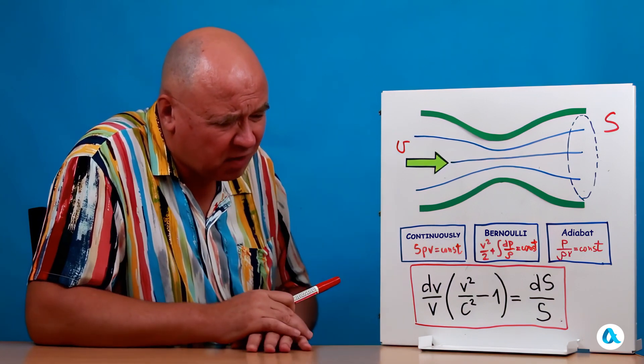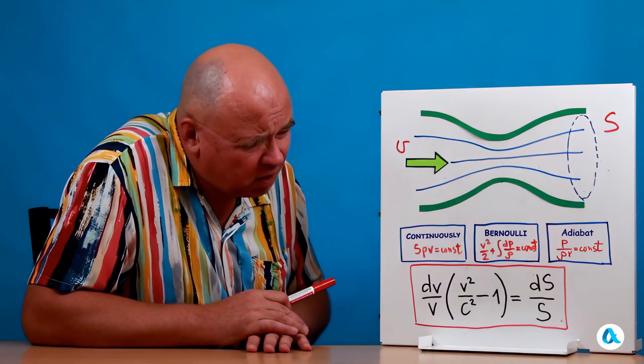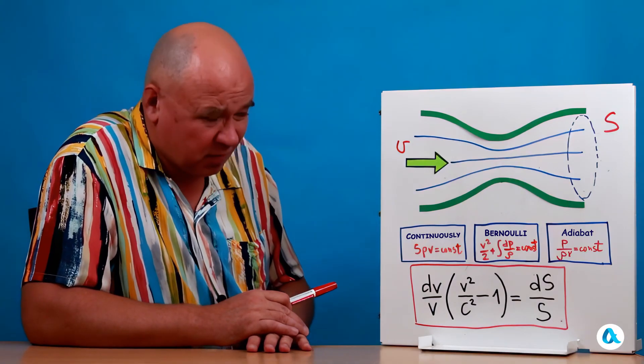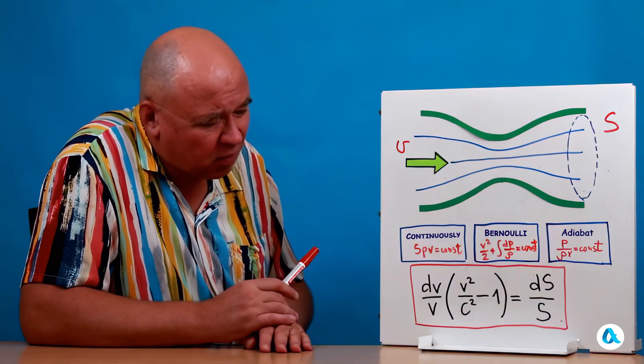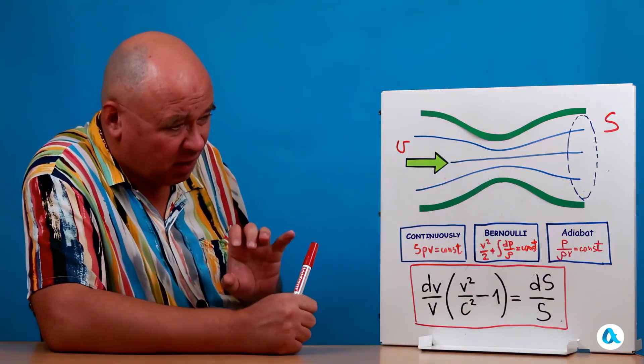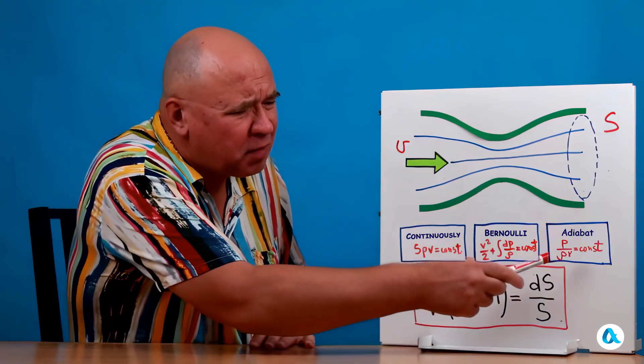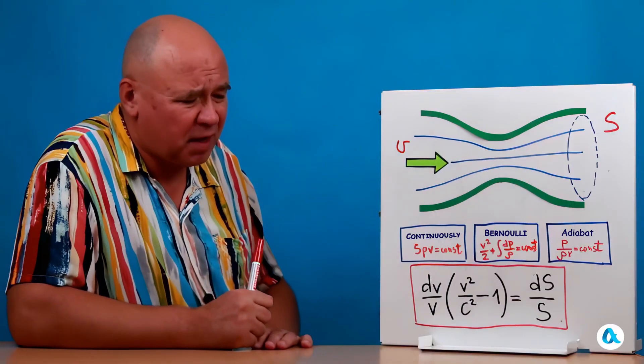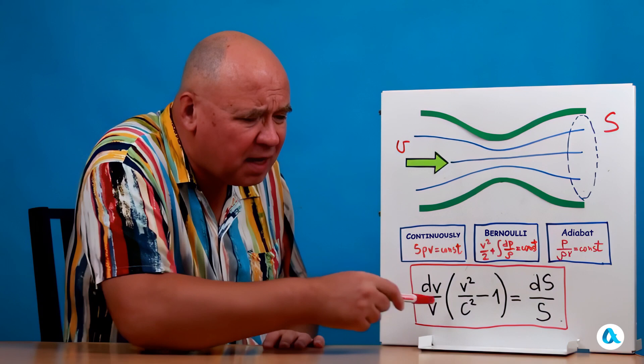So, when all three of these relationships are written in differential form, we eliminate pressure and density from them. That means, out of the four quantities we had, only two remain: velocity and cross-sectional area. And the speed of sound also appears in the process. The speed of sound comes from the adiabatic equation. It doesn't just fall from the sky, so to speak. And in the end, it turns out that everything comes together in this kind of relationship.